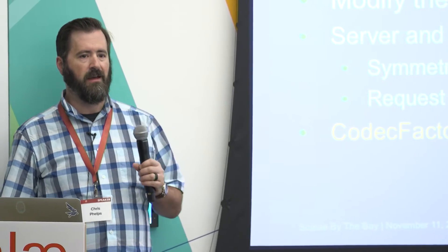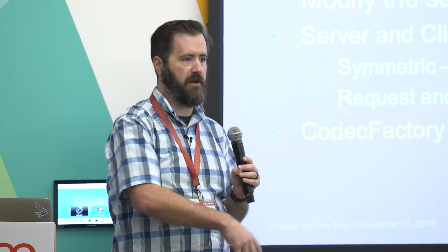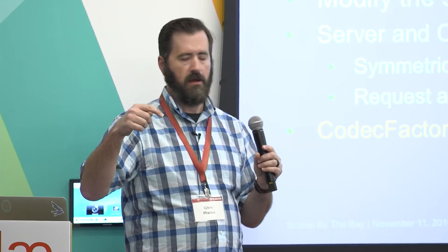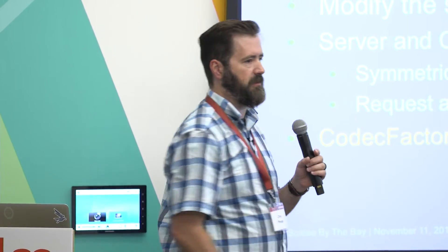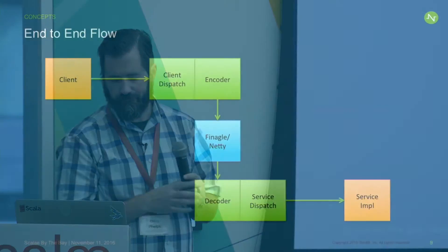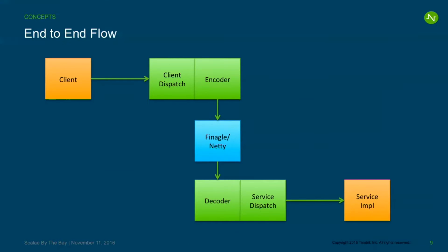Codec factory is a trait that relates your client and server codecs. Technically you end up with a client codec for writing to the service side and a service codec for reading. The flow is: client code calls the client dispatcher, encodes data for the wire, sends it over the Finagle Netty channel pipeline. On the other side, decode it back into objects, figure out what to call in your service dispatcher, call the service implementation. Coming back, reverse the arrows — re-encode, send back, client unpacks and matches it back to the request. Service and client dispatchers handle any errors.